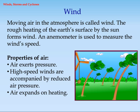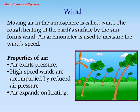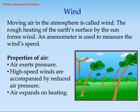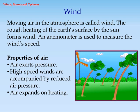Wind is moving air in the atmosphere. The uneven heating of the earth's surface by the sun forms wind. An anemometer is used to measure the wind's speed.